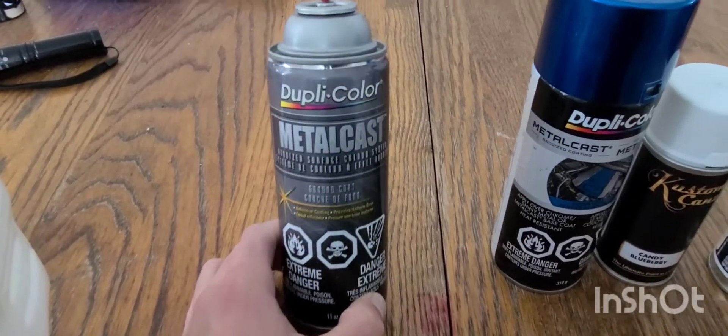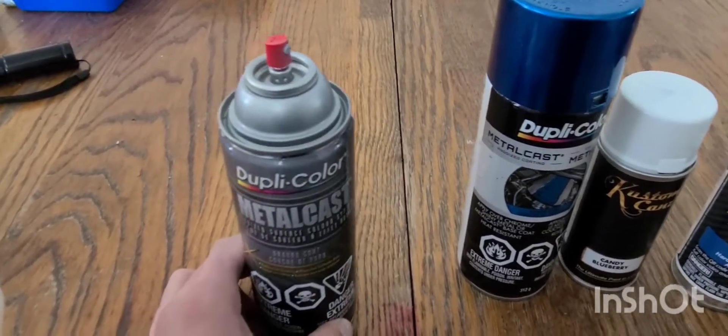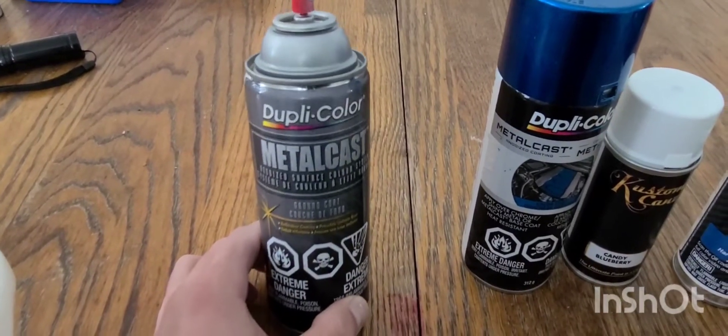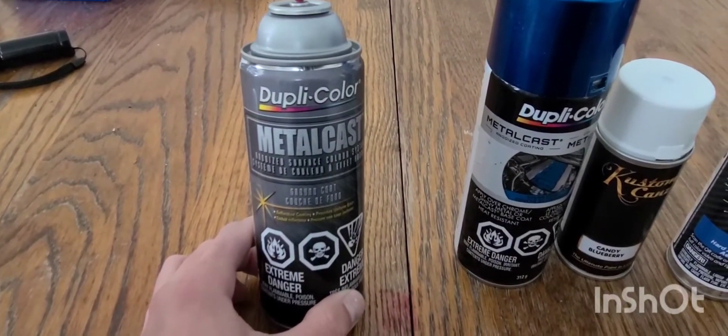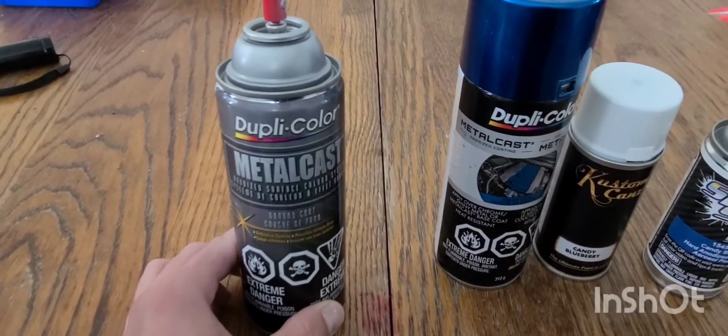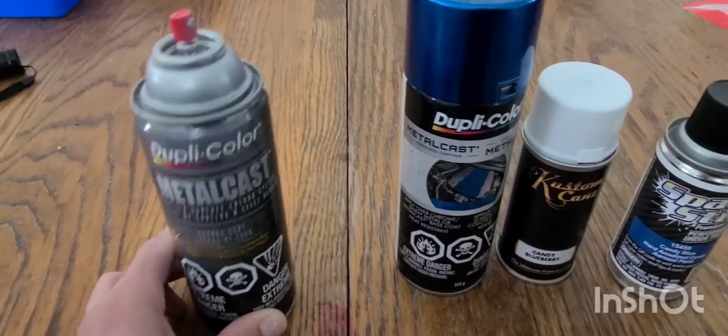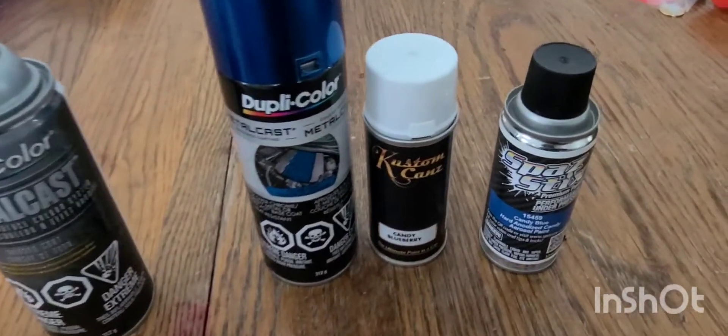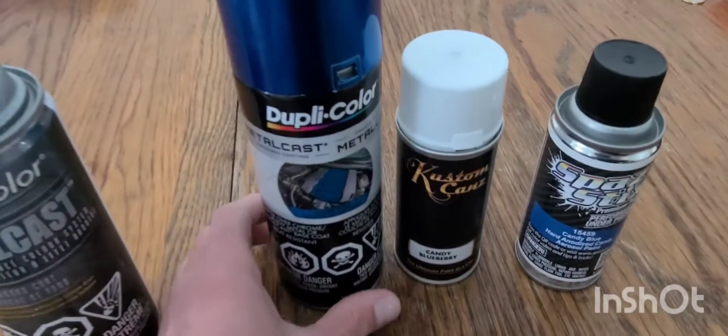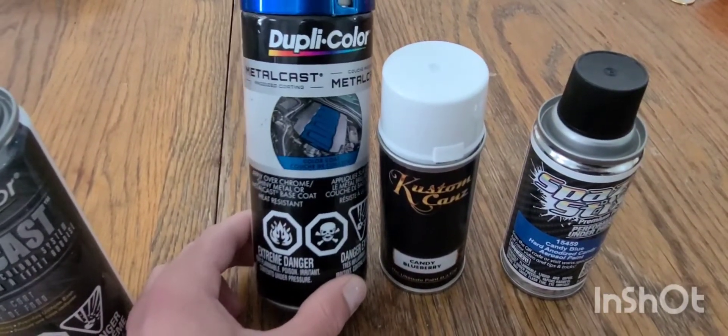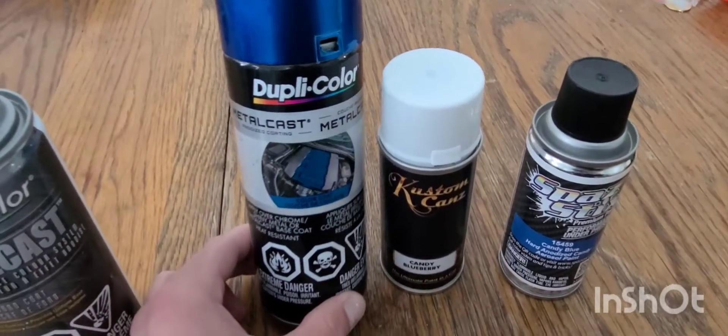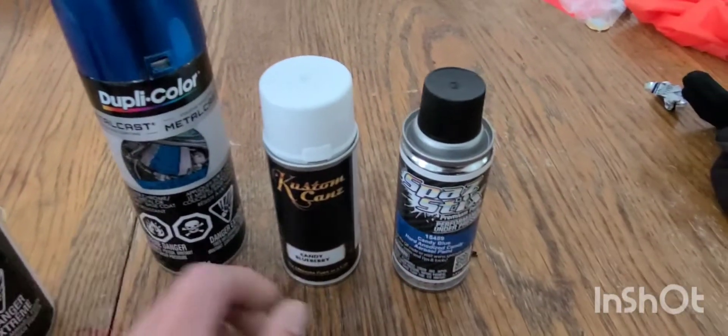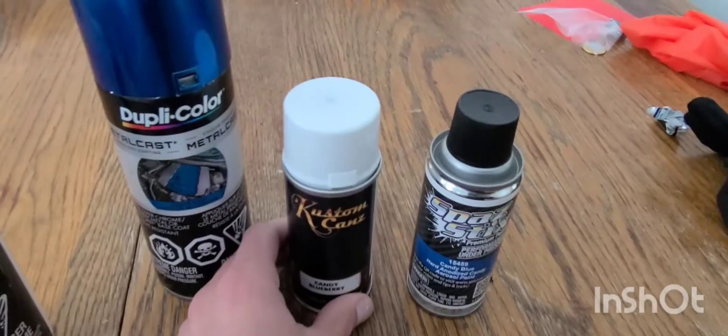There's a bunch of other base coats you can use, like white, silver, black, and gold. I believe they all work really good for candy colors. Keep in mind candy colors, it's kind of like a clear coat with blue tint to it, so you got to apply a lot of coats.